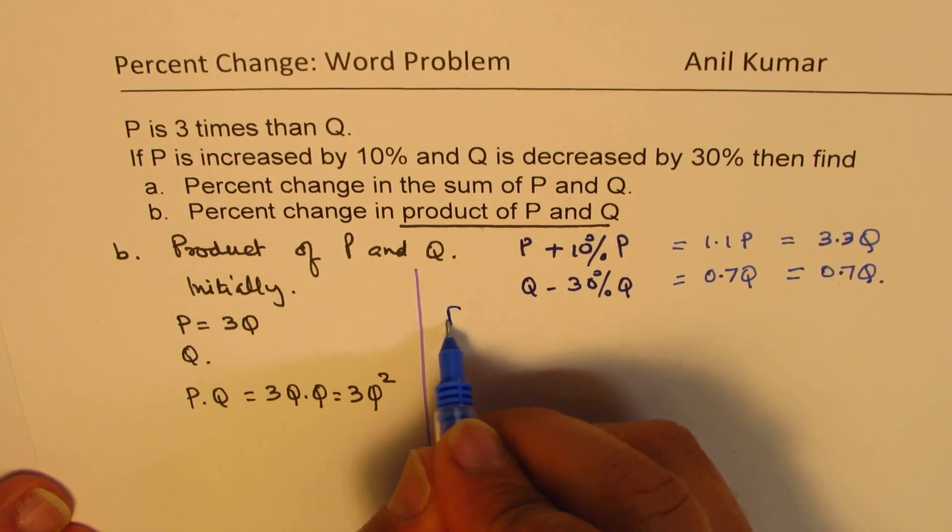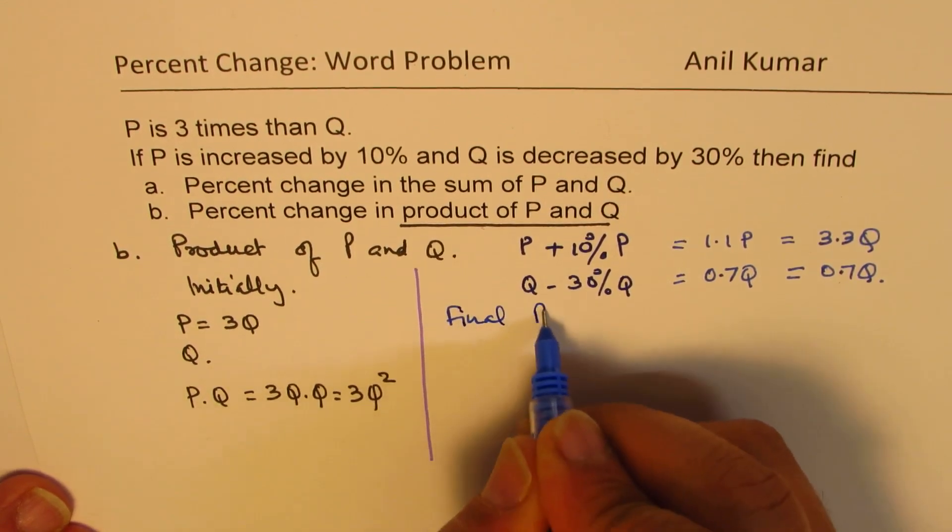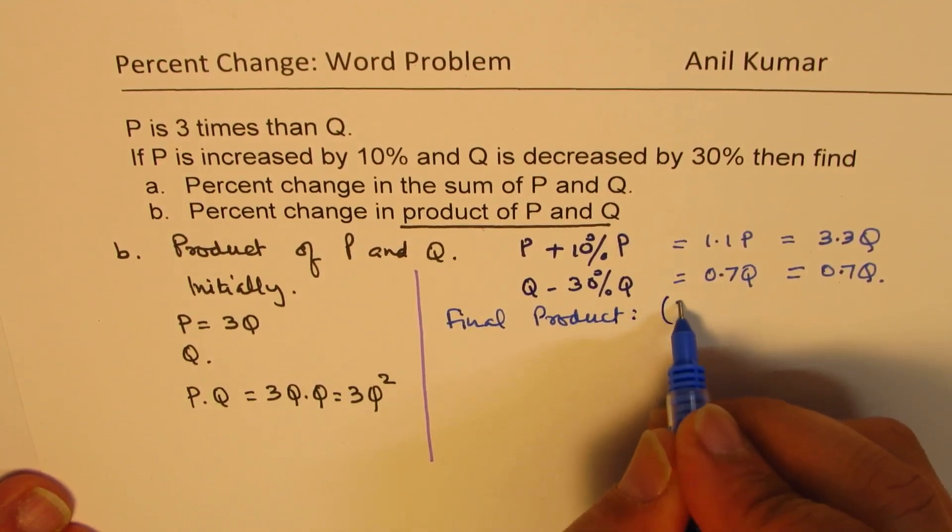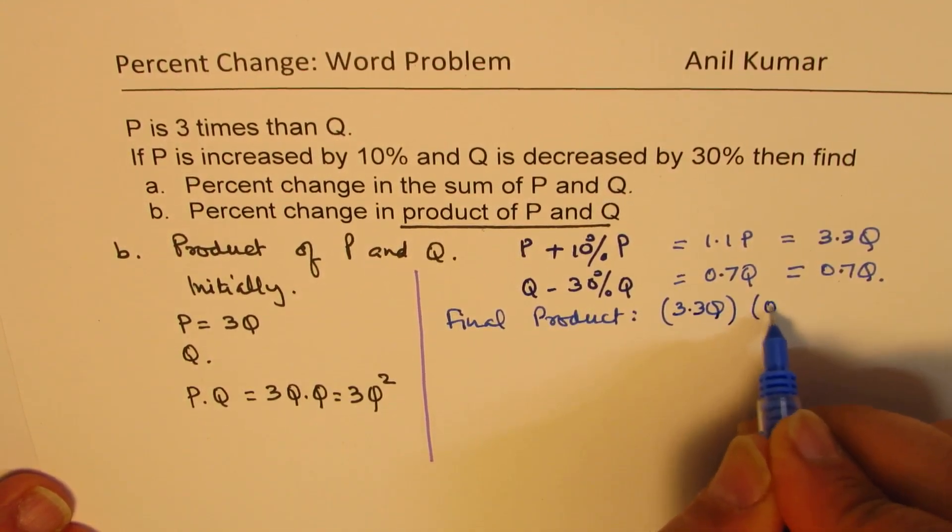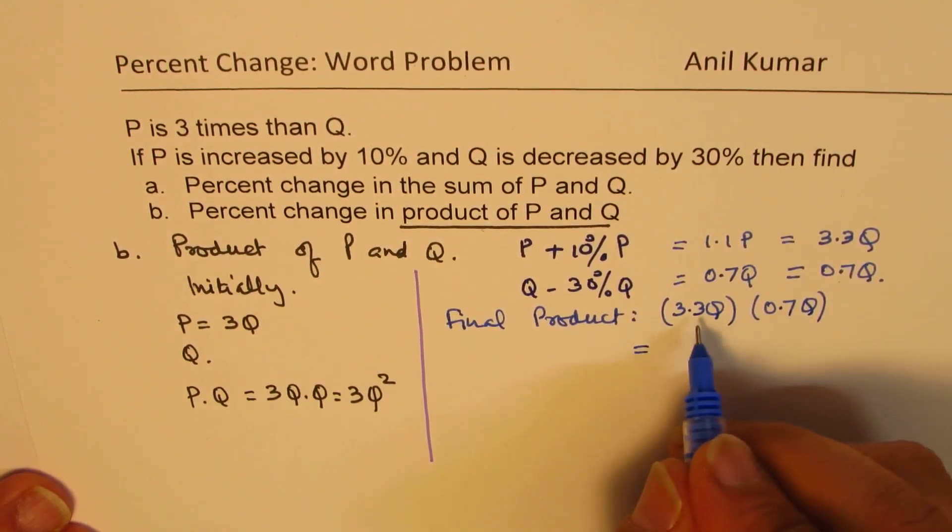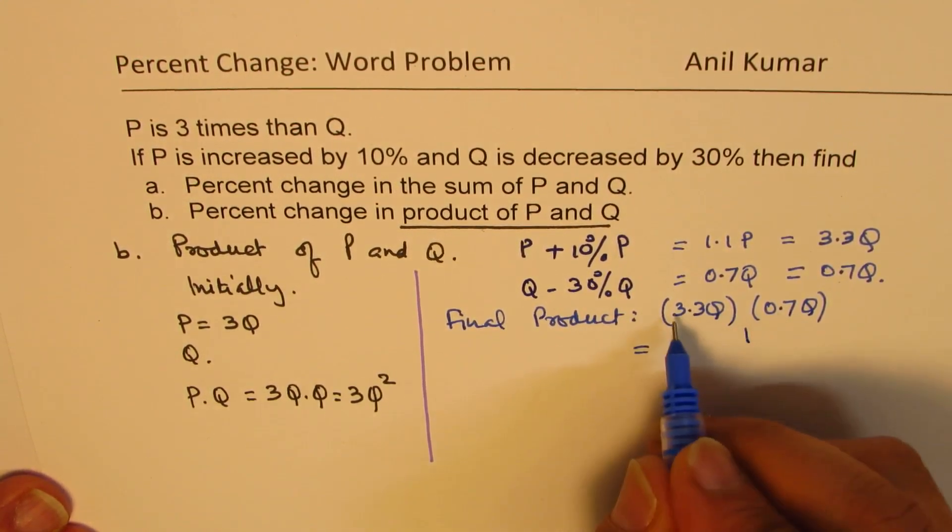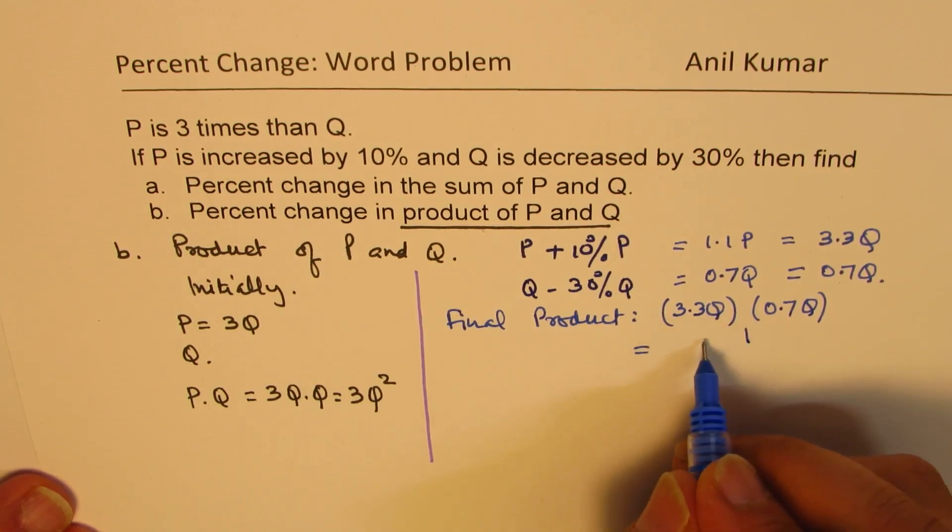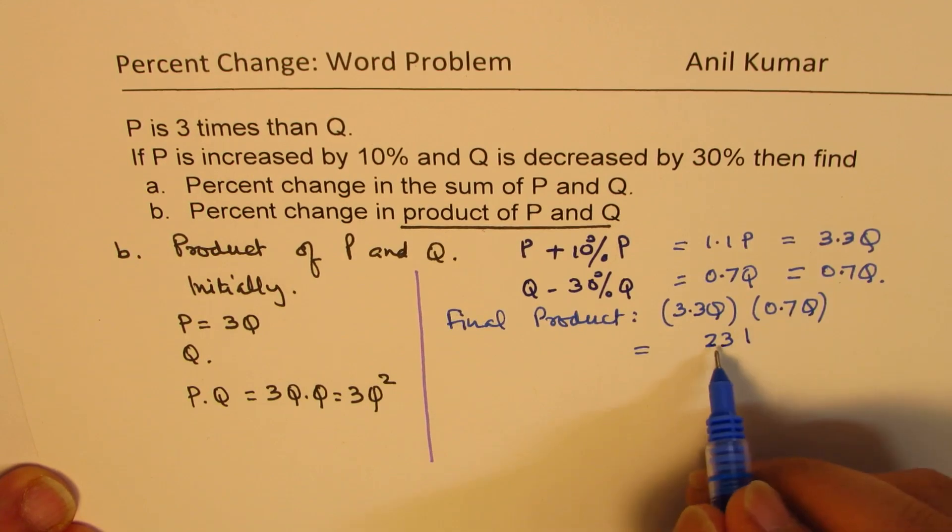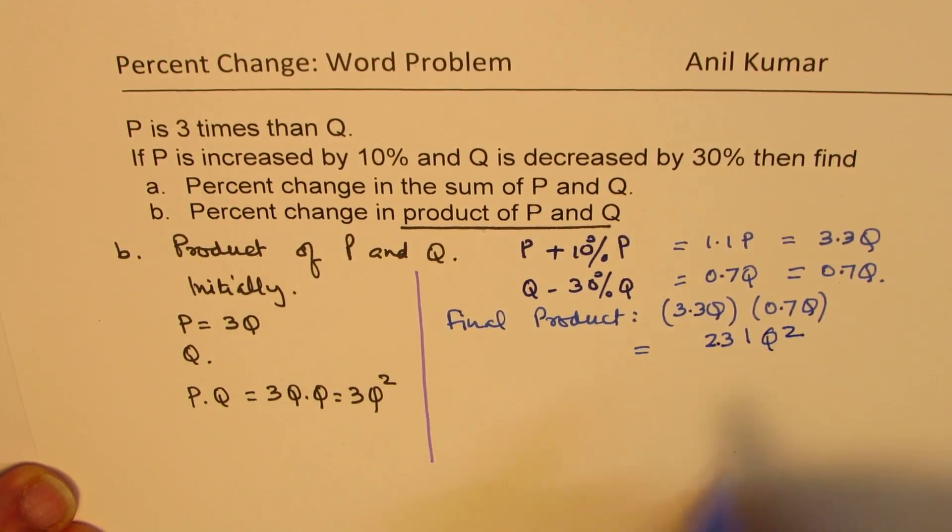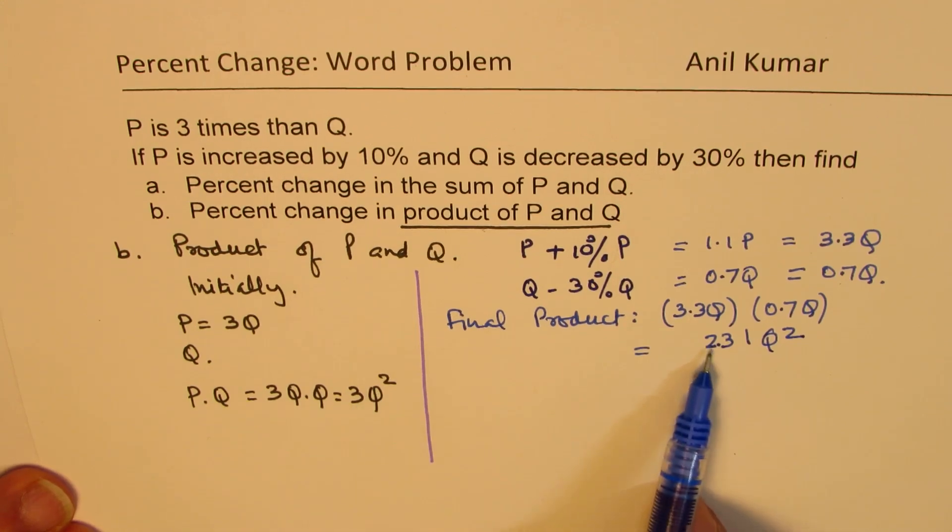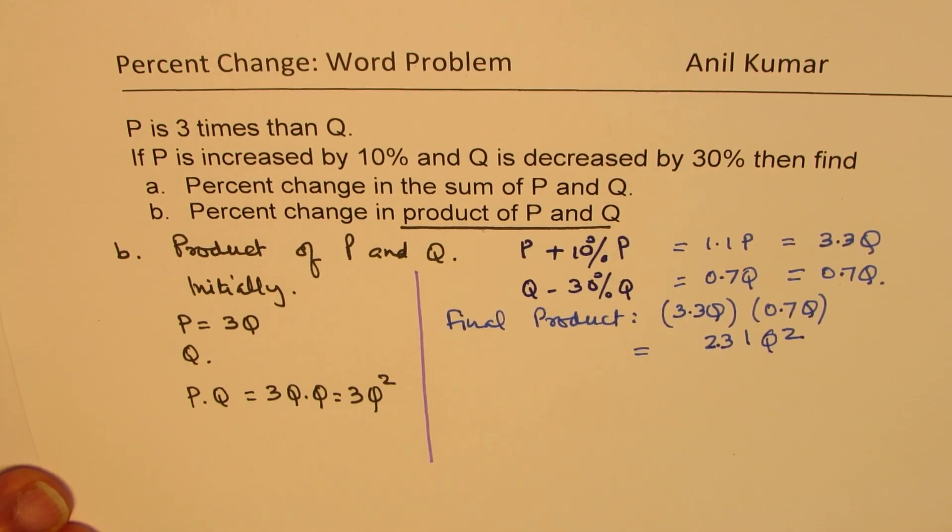So now, final product is 3.3Q times 0.7Q. So this is equal to 7 times 321. 7 times 321 and 2 is 23. Okay? 2 decimals. So 2.31Q squared. Now, initial is 3Q squared. Now we have 2.31Q squared. So we can now calculate the change.